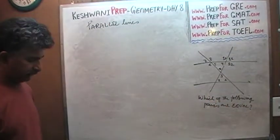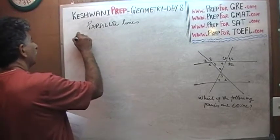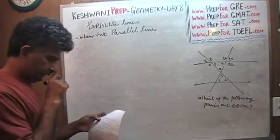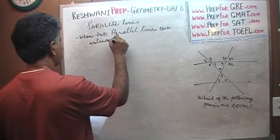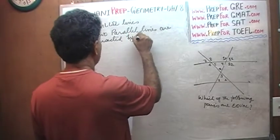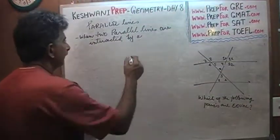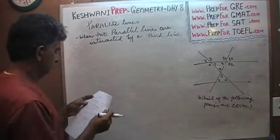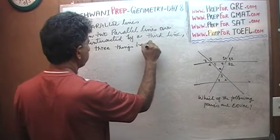There are three pairs that I am going to give you, which I am not going to write down there because it is too low. But before I go into this, let's first talk about what we need to learn today. When two parallel lines are intersected by a third line, three things happen.